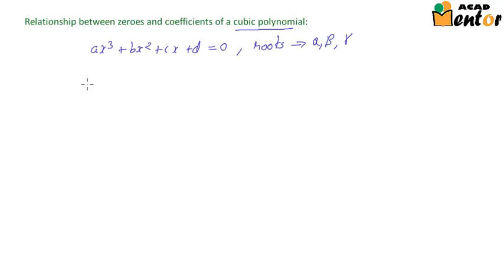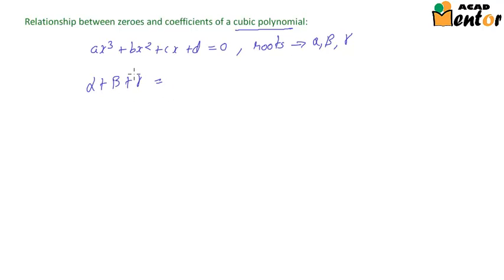Just like in the case of a quadratic polynomial, the sum of roots is given as alpha plus beta plus gamma, which equals minus the coefficient of x² divided by the coefficient of x³.